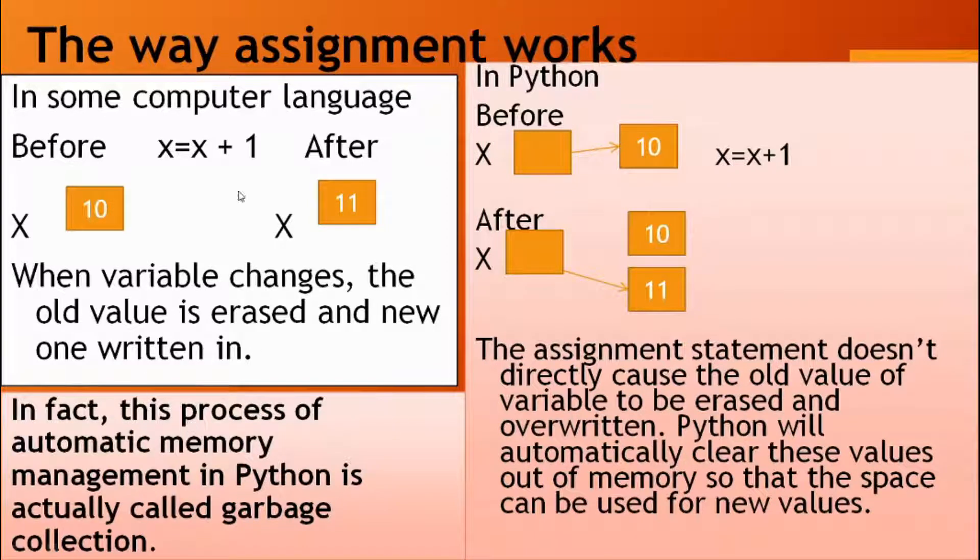Next, the way assignment works. In other computer languages, x equals x plus 1: before executing this statement x value is 10, after executing this statement x value is 11, meaning 10 is erased. In Python, before executing this statement x value is 10. After executing, 10 is not erased and the value is 11.